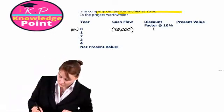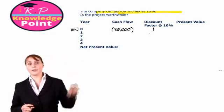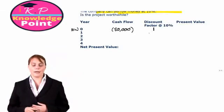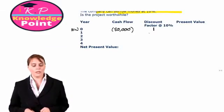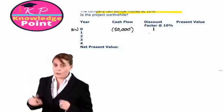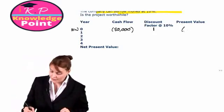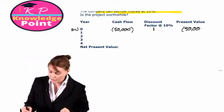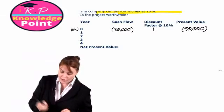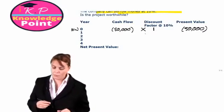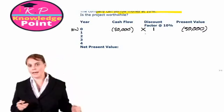The discount factor for time period zero, so the present time, will be one. Therefore, the present value of that $50,000 cash outflow is just the value of the outflow multiplied by the discount factor.